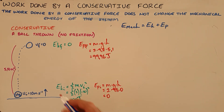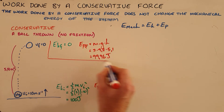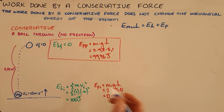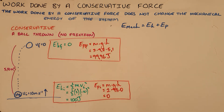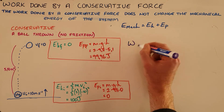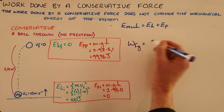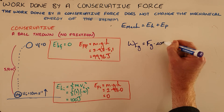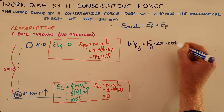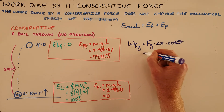The mechanical energy at the beginning is equal to the mechanical energy at the end. The slight difference here is a result of rounding. We can demonstrate this using the formula for work done by the gravitational force, which is equal to the product of the gravitational force, the displacement of the object, and the cosine of the angle between them.